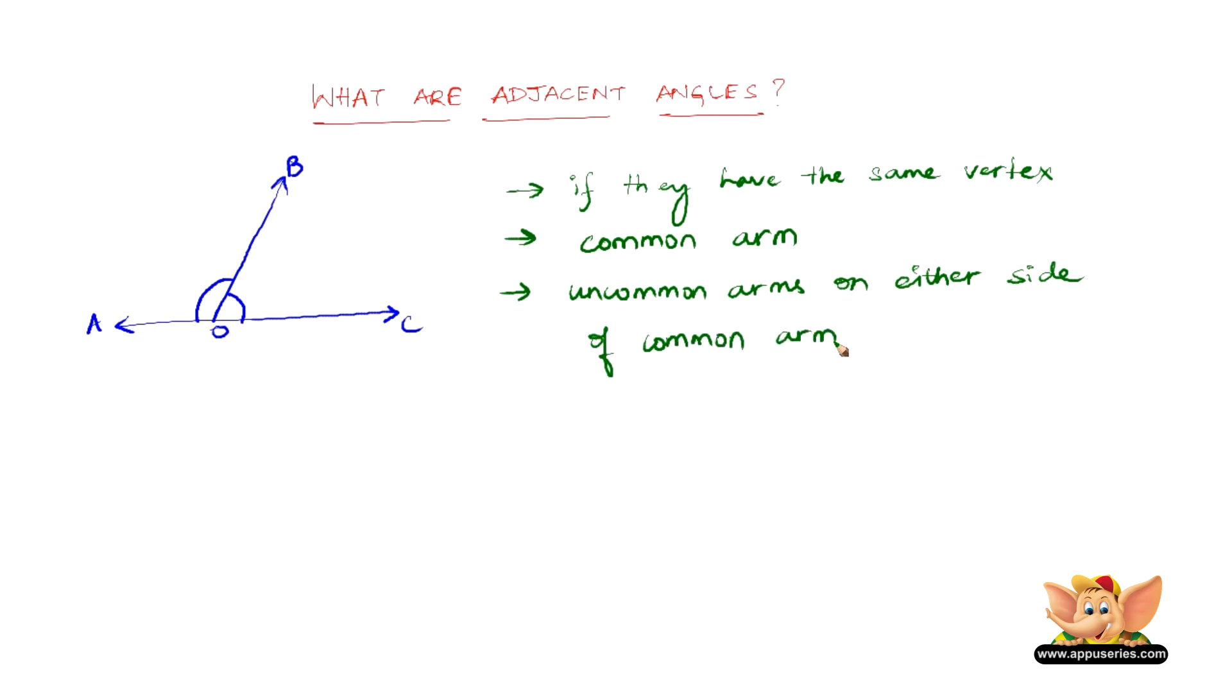What is a vertex? Vertex is the point from where the two rays that make an angle originate. So this is the vertex for this line, this line and this line. So this is the vertex for angle B, O, C and angle A, O, B or B, O, A.